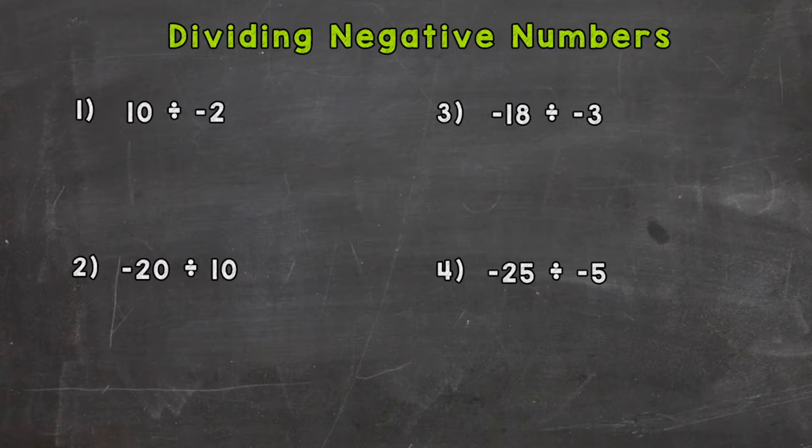For number 1 we have 10 divided by negative 2. The first thing we need to do is divide 10 by 2 which gives us an answer of 5. Now that's not our final answer though because we have a negative number involved. Whenever we have a positive divided by a negative, our answer is going to be negative.